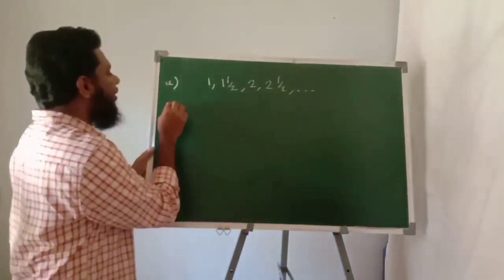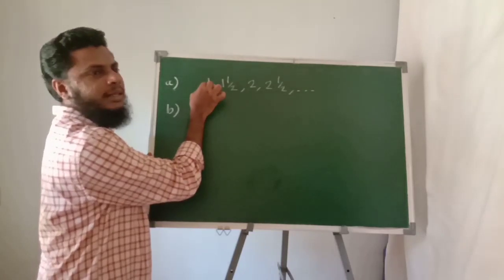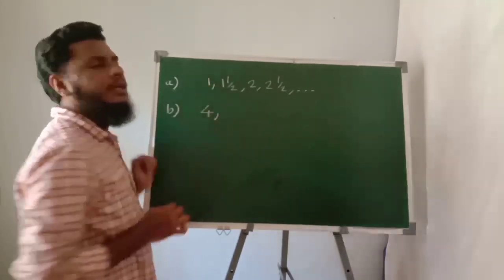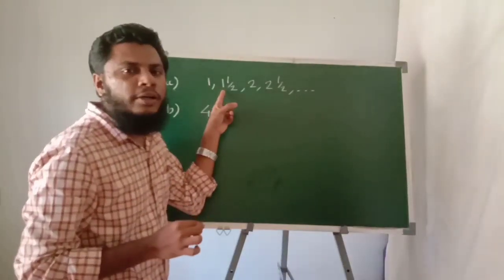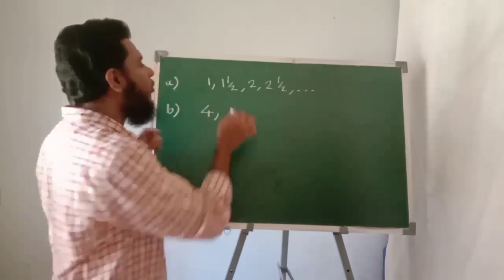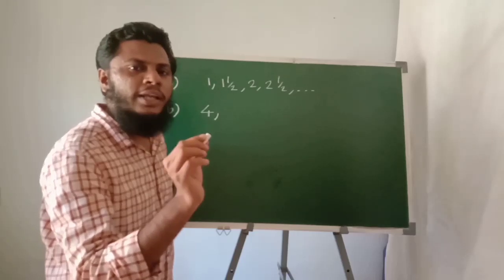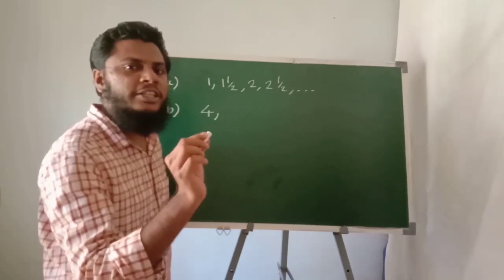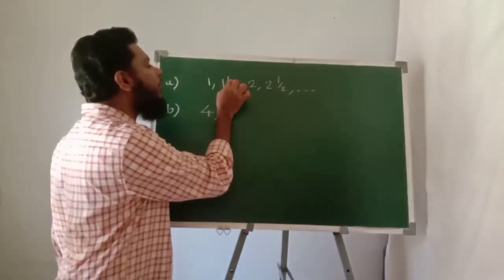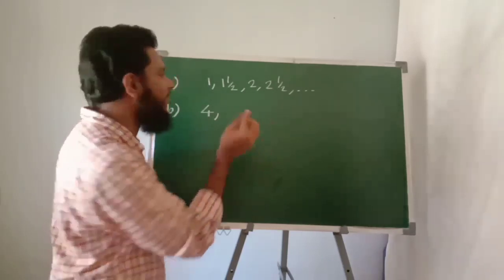The perimeter of a square is side length times 4. When the square side is 1, the perimeter is 1 times 4 equals 4. When the square side length is 1 and a half, 4 times 1 and a half gives the perimeter.